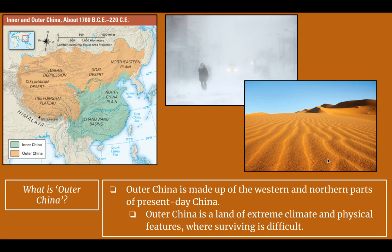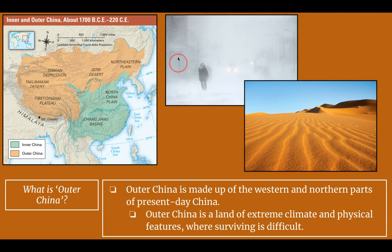Outer China is made up of the Western and Northern parts of present day China. All of this red area here is outer China — the Northern part and the Western part. Outer China is a land of extreme climate and physical features where surviving is difficult: very cold with snow and storms, and deserts with sand and sandstorms — just a difficult place to live.